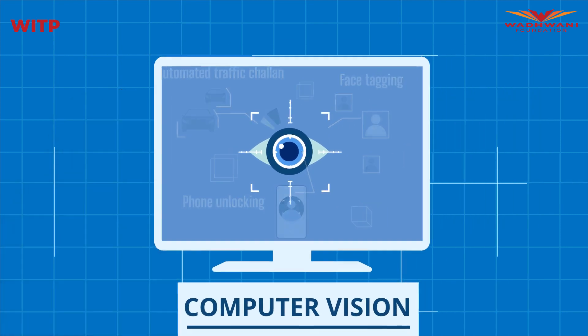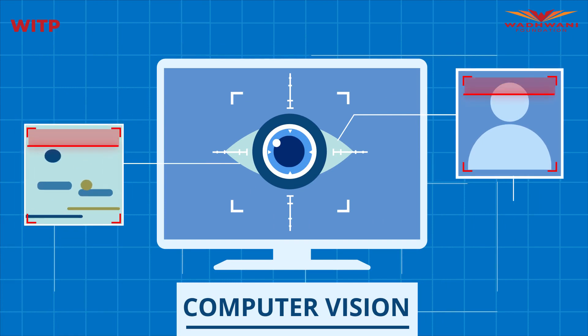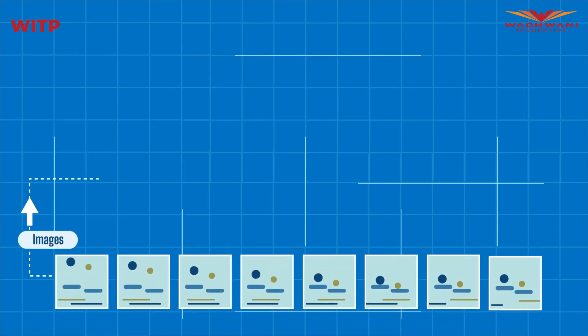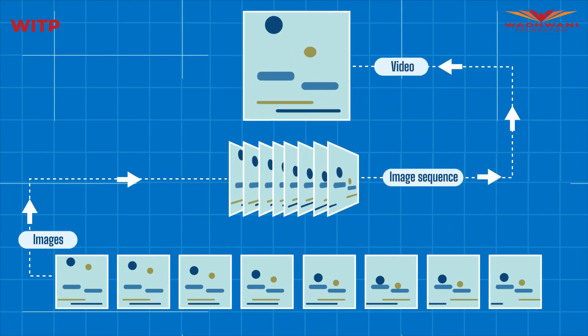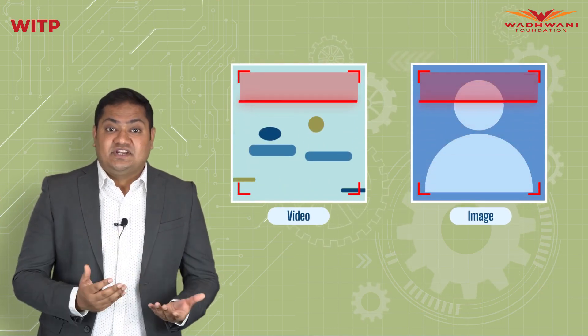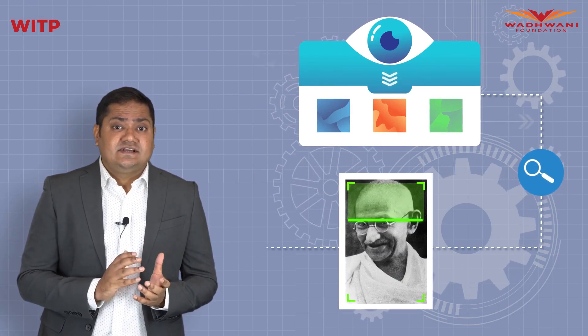Computer vision gives computers the ability to not only see but also to analyze digital images and videos. Since videos are just a sequence of images displayed at a given frequency, whatever computer vision can do with images it can also do with videos. For simplicity, we will stick to images in this video. Let's dive a little deeper into how computer vision is able to analyze images and give us useful information.